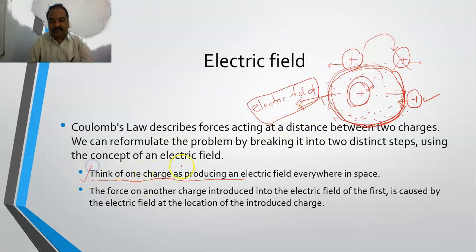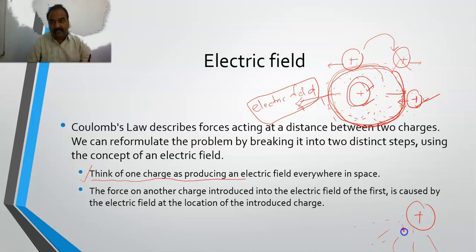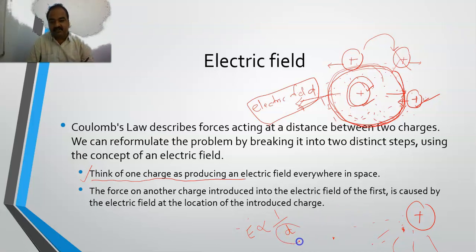You think of one charge as producing an electric field everywhere in space. This charge is producing an electric field, and the force on any other charge introduced into this electric field is caused by this electric field. Now, this electric field — let us suppose there is a charge here. The electric field created by it: if I choose a point closer to the charge, the impact of the electric field may be higher; and if I choose a point farther away, the impact may be lower. Which means that the electric field, often referred to as E, is inversely proportional to D. And if the magnitude of the charge is higher, then the electric field may be higher. So E is proportional to Q and inversely proportional to D.